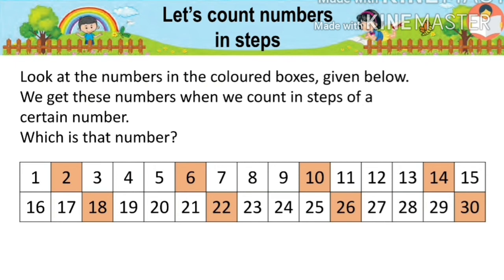Now look at the numbers in the colored boxes given below. We get these numbers when we count in steps of a certain number. What is that number? We have to find and count that step number. The sequence starts at six. Going to the next number, ten — we count one, two, three, four steps forward.